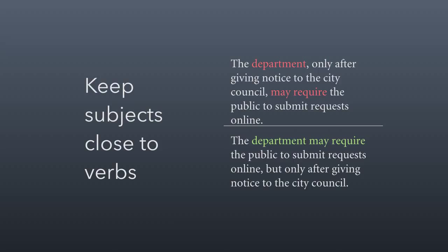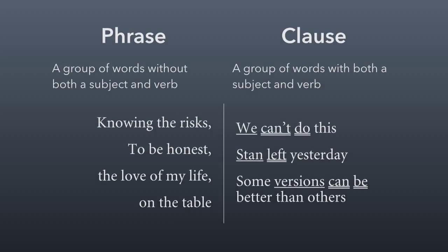Let's talk now about phrases and clauses. A phrase is a group of words without both a subject and a verb. A clause is a group of words that have both a subject and a verb. On the left, we have phrases like 'knowing the risks,' 'to be honest,' 'the love of my life,' 'on the table.' Those are all groups of words — some have verbs, some don't, some have subjects, some don't — but they're not clauses because they don't have both a subject and a verb.